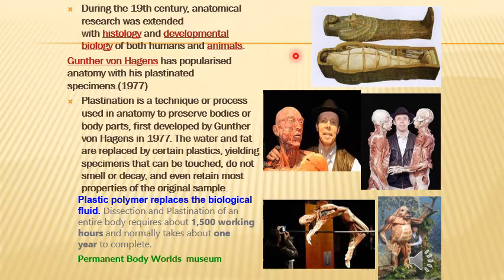During the 19th century, this aspect led to anatomical research that extended into histology and developmental biology of both humans and animals. Cut sections of body tissues were stored in preserving fluids and observed under the microscope, which was also invented during this period.